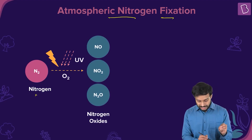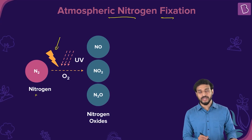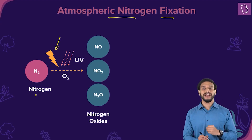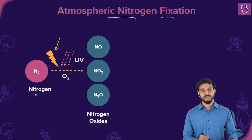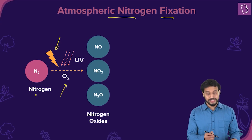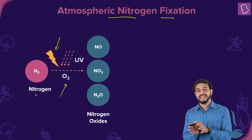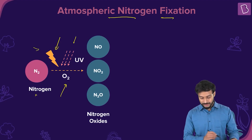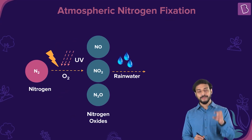In atmospheric nitrogen fixation, UV (ultraviolet) light is high-energy light capable of breaking the triple covalent bond of the N2 molecule. Lightning, being very high energy, can also break this triple bond between the two nitrogen atoms. Oxygen present in the atmosphere aids the process. High energy provided by UV and lightning, in the presence of oxygen, forms nitrogen oxides.